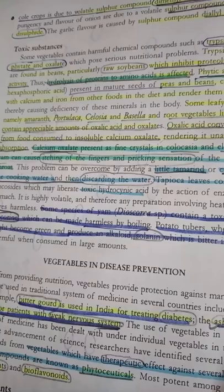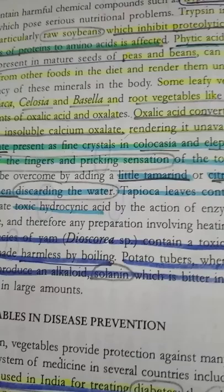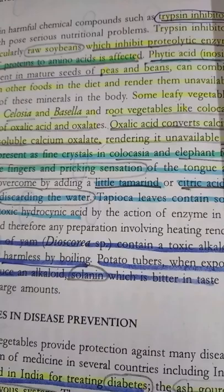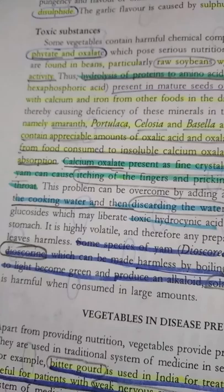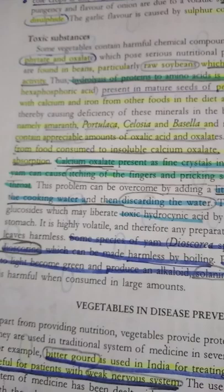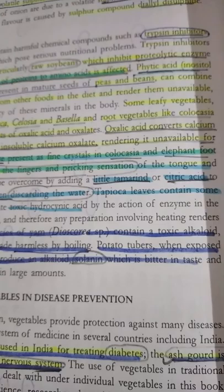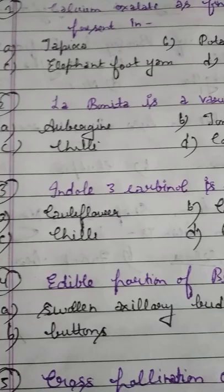Potato tubers, when exposed to light, become green and contain an alkaloid solanin which is bitter in taste — please remember this. Tapioca leaves contain some glucoside which releases toxic hydrocyanic acid by the action of enzymes in the stomach. In vegetables, tapioca secretes HCN, and in cereal crops, sorghum secretes HCN — please remember.